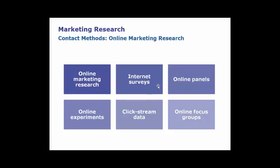Now, online marketing research contact methods. In online marketing research you have internet surveys, online panels, online experiments, clickstream data, and online focus groups. These fall into a comfort zone where you can tell the consumer that their data will be hidden, they will stay anonymous, and their answers will be mixed with others — no one would find out. Many people also participate in online experiments and sometimes expect an incentive in terms of cash or money.